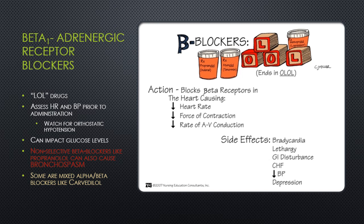There are both non-selective and selective beta blockers. A non-selective beta blocker, such as propranolol, will have effects on both beta-1 and beta-2 receptors. Therefore, patients who have a bronchospastic disease, such as asthma, can end up with a side effect of bronchospasm from a non-selective beta blocker. Selective beta blockers, such as metoprolol, select specifically for beta-1 receptors and not beta-2. However, in very high doses, they too can cause bronchospasm.